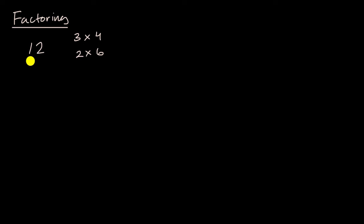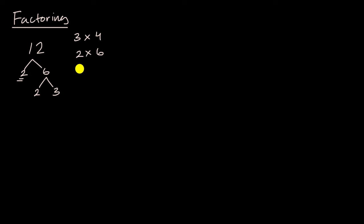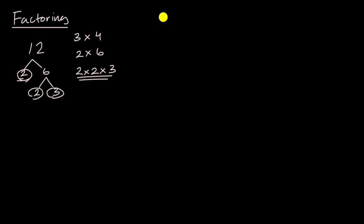So we've done stuff like: 12 can be expressed as two times six. Two is prime, but six can be expressed as two times three, and so 12 can be expressed as two times two times three, which we see right over here. This is all review, and this would be a prime factorization. And we saw an analog when we first learned it in Algebra 1.